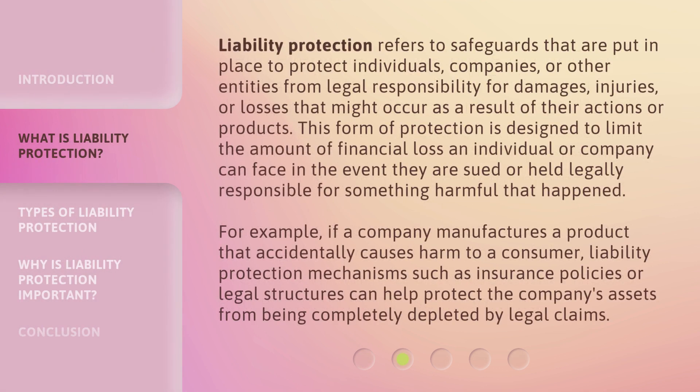Liability protection refers to safeguards that are put in place to protect individuals, companies, or other entities from legal responsibility for damages, injuries, or losses that might occur as a result of their actions or products. This form of protection is designed to limit the amount of financial loss an individual or company can face in the event they are sued or held legally responsible for something harmful that happened. For example, if a company manufactures a product that accidentally causes harm to a consumer, liability protection mechanisms such as insurance policies or legal structures can help protect the company's assets from being completely depleted by legal claims.